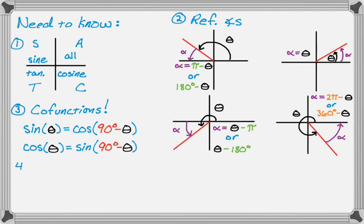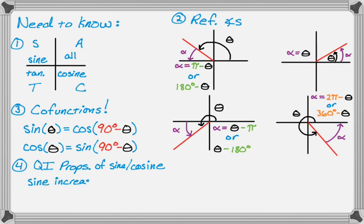A fourth thing we need to know: the quadrant one properties of sine and cosine. In the first quadrant, sine increases, so the sine of a larger angle is bigger than the sine of a smaller angle — for example, sine of 35 is bigger than sine of 1. Cosine, on the other hand, decreases, so cosine values decrease as the angle increases.